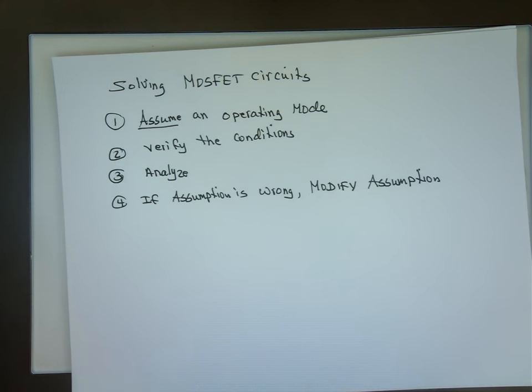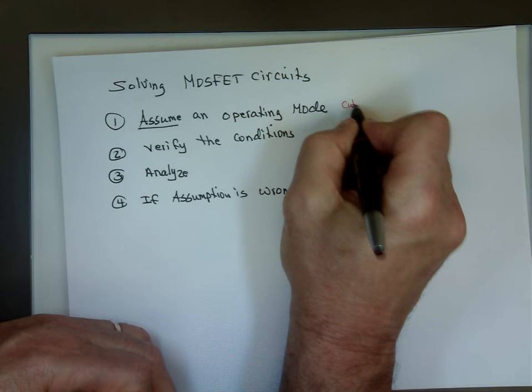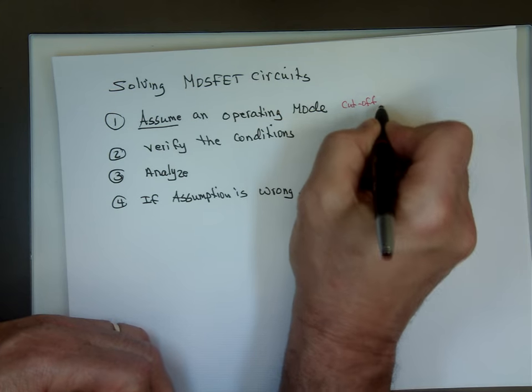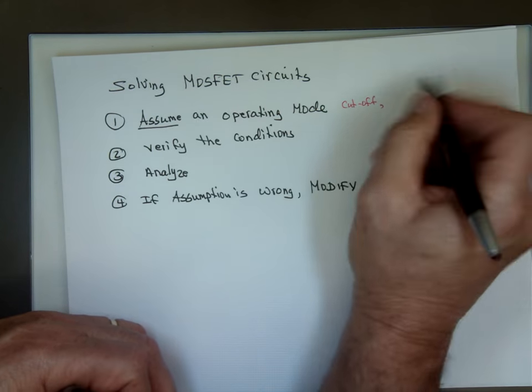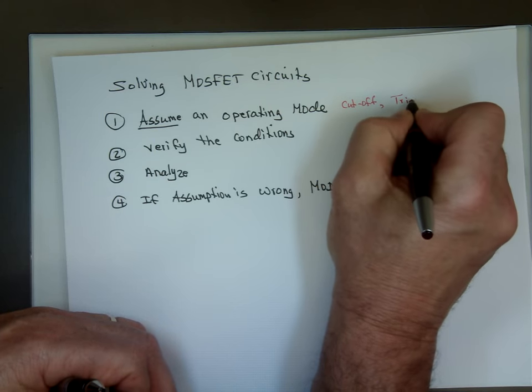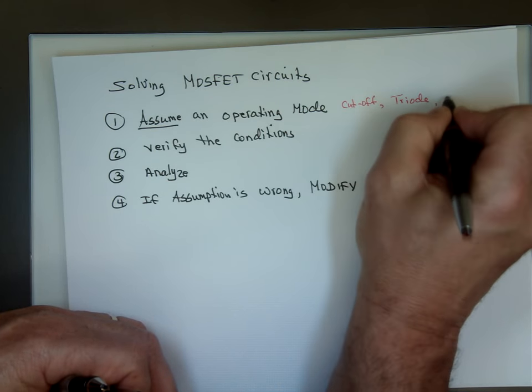These are the steps I'm going to use. So when you assume operating mode, again, we have cutoff, which means the current is zero. We have ohmic, triode, or ohmic, and we have saturation.